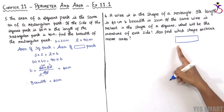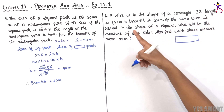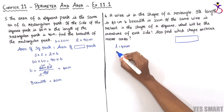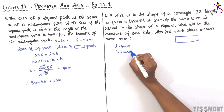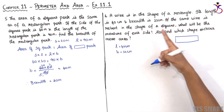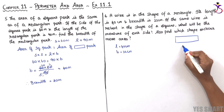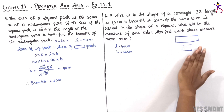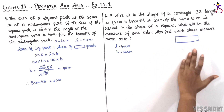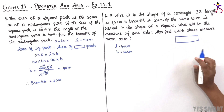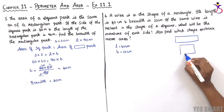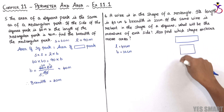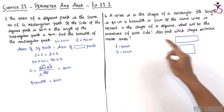Now let's move to the sixth sum. A wire is in the shape of a rectangle, its length is 40 centimeters and breadth is 22 centimeters. If the same wire is re-bent into the shape of a square, since we are using the same wire and just reformatting its shape, the perimeter remains the same.